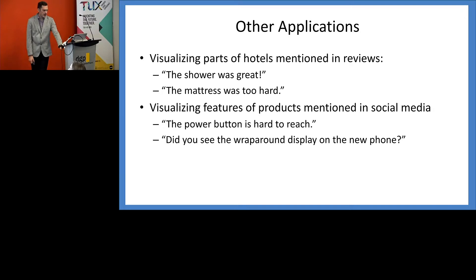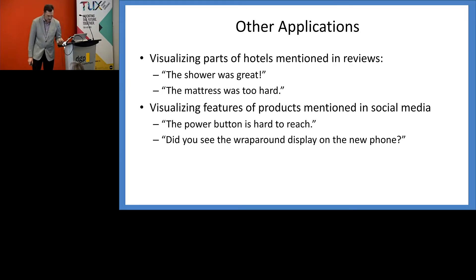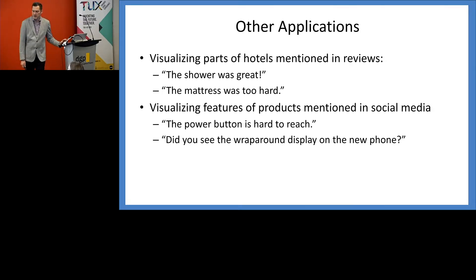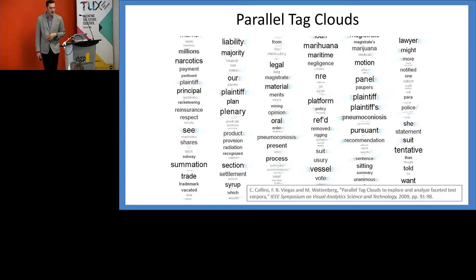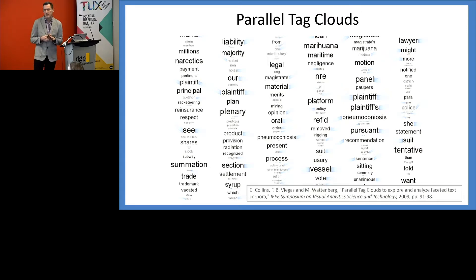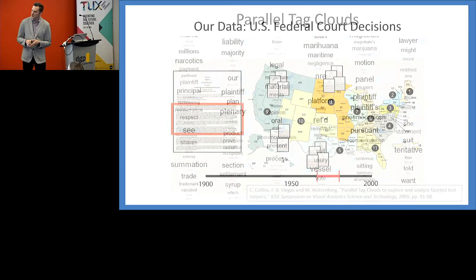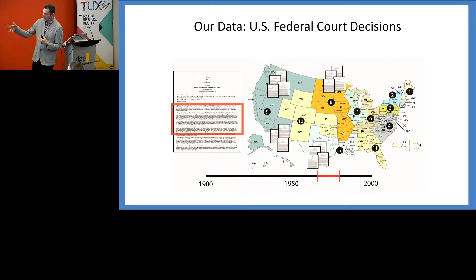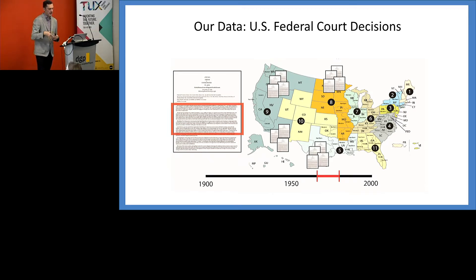Moving on, I want to talk about a project called Parallel Tag Clouds, which is a bit older but has had long-lasting traction within our community. We were working with people at the Berkman Center at Harvard Law School to analyze thousands of court decisions to understand differences between U.S. federal courts. The U.S. federal court system has a series of roughly geographically associated entities for higher-level cases and appeals — federal court districts. We had a collection of all decisions of the courts over their entire history of existence.